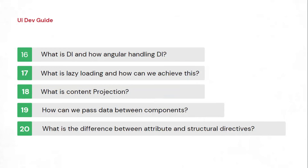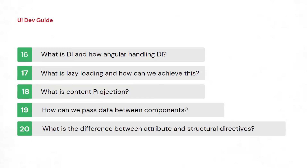The next question is about lazy loading, which is a performance-related topic. You should explain how to create a lazy loading module — the command to create it, how to include it in routing using loadChildren with the module path, and how it works. Counter questions include: is a lazy loaded module added to the initial bundle? And if you click multiple lazy-loaded links, do they load one by one or simultaneously?